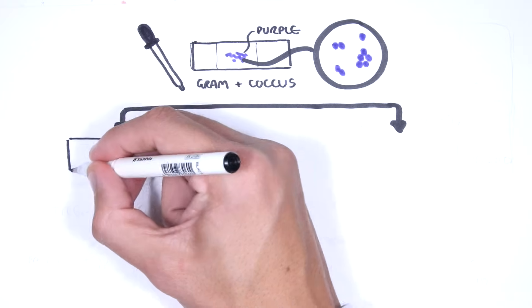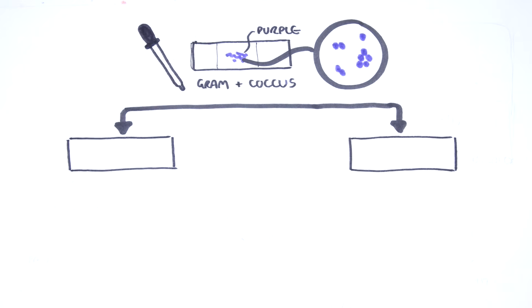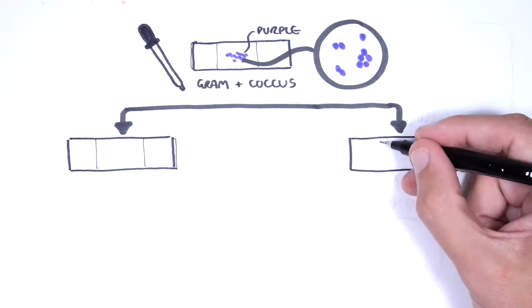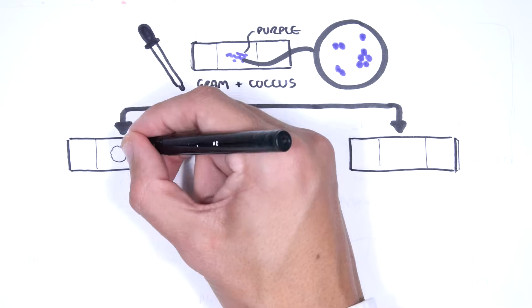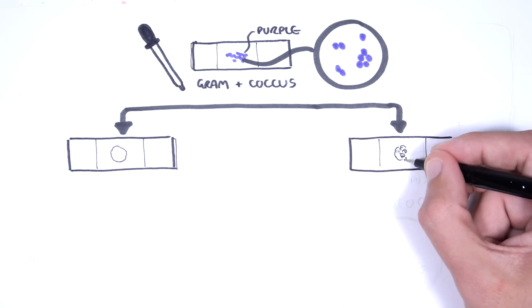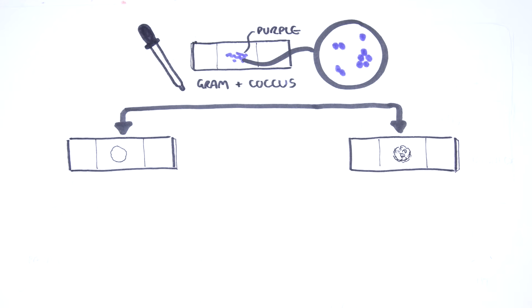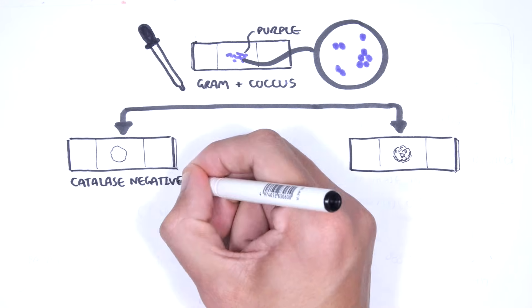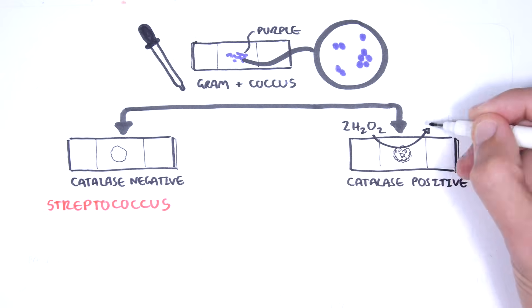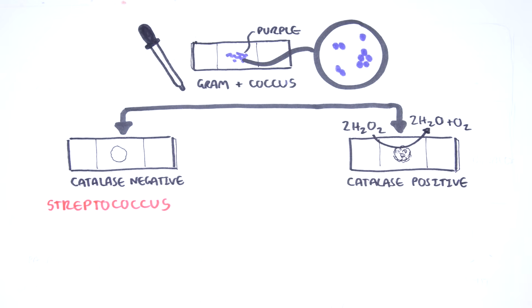They are differentiated by two main criteria. Firstly, their ability or inability to produce the enzyme catalase. Streptococcal species are catalase negative. Staphylococcal species are catalase positive, which allows them to convert hydrogen peroxide to water and oxygen gas.